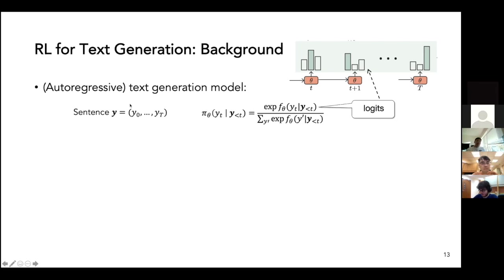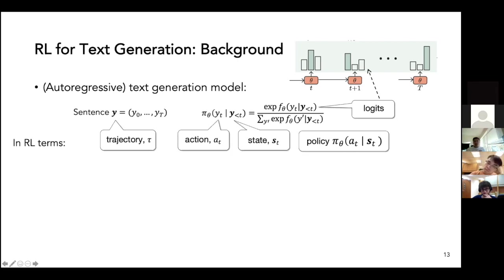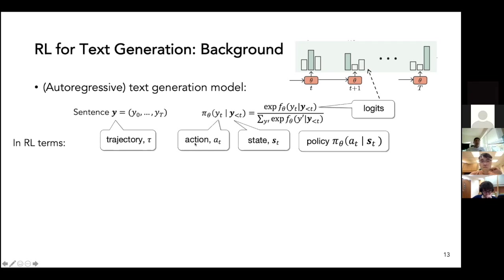We usually want to train a text generation model, which is usually an autoregressive model, given a sentence, to generate a sentence Y as a sequence of tokens. The autoregressive model defines the probability of a token given all the previous tokens by applying a softmax function on top of the logits. From the RL perspective, the sentence is called the trajectory and the token to be generated is called the action A. The previous tokens as the condition for generating this token are also called the state S, and the whole generation model is called the policy.